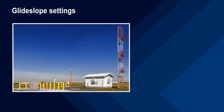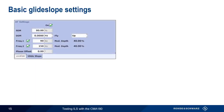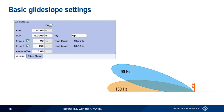Now that we've covered localizer, let's move on to discussing glide slope. As previously noted, most of the concepts in localizer apply to glide slope signals as well. The basic glide slope settings work the same way — they allow you to change the frequency of the two lobes, turn one of the lobes off, and change the phase offset between the lobes. Again, these are completely analogous to the basic settings for localizer.